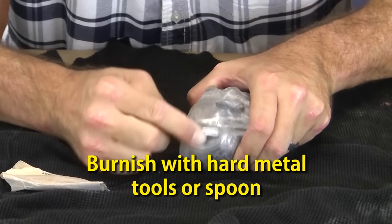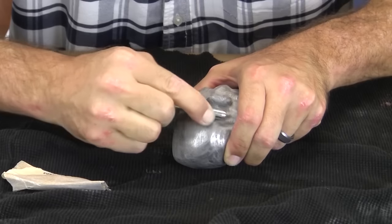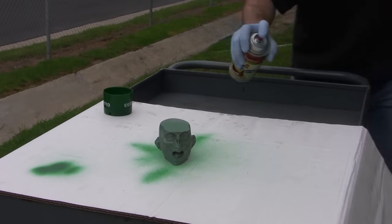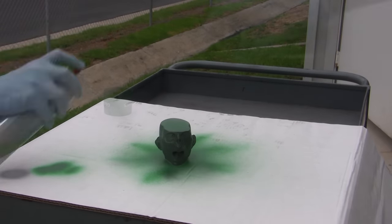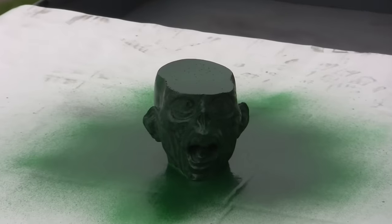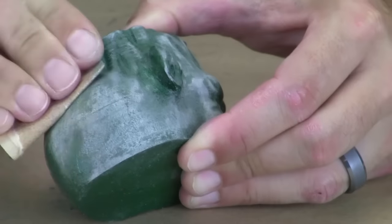You can burnish the surface with a hard metal rod or spoon to bring out even more shine. To achieve even more depth and contrast, we can apply paints or stains to the part before we work the surface. Some black and green paint should give our zombie a ghoulish look. Now watch as we take this part to the next level.